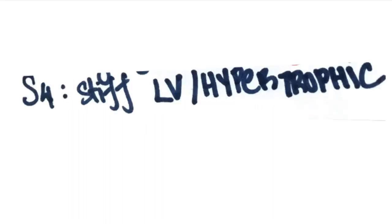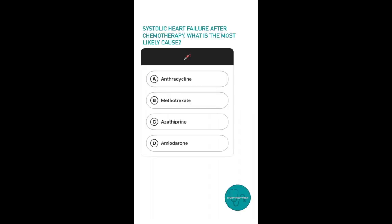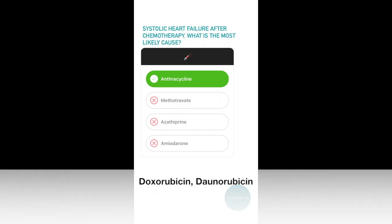S4 is usually seen in left ventricular hypertrophy when the wall is stiff. Question 5. Systolic heart failure after chemotherapy — what is the most likely cause? Option A, anthracycline; option B, methotrexate; option C, azathioprine; option D, amiodarone. The answer is anthracycline. Anthracyclines are chemotherapeutic agents which can cause dilated cardiomyopathy. Examples are doxorubicin and daunorubicin. Dexrazoxane is an iron chelating agent which can be used to prevent cardiotoxicity.